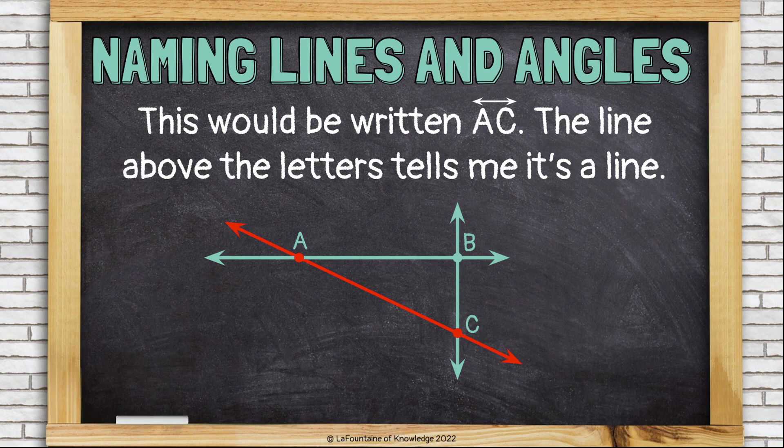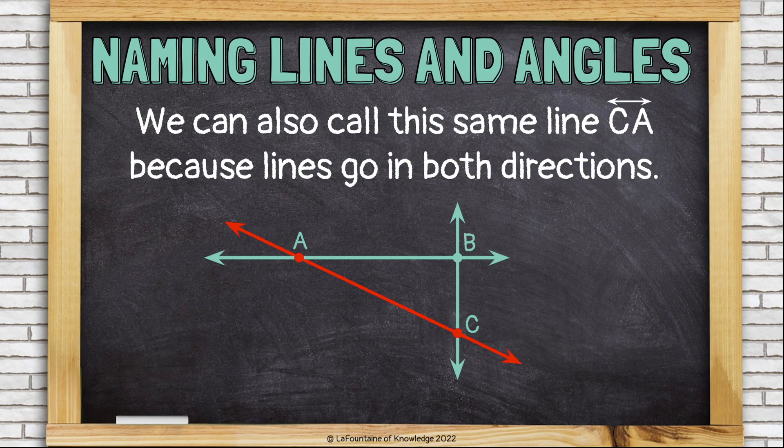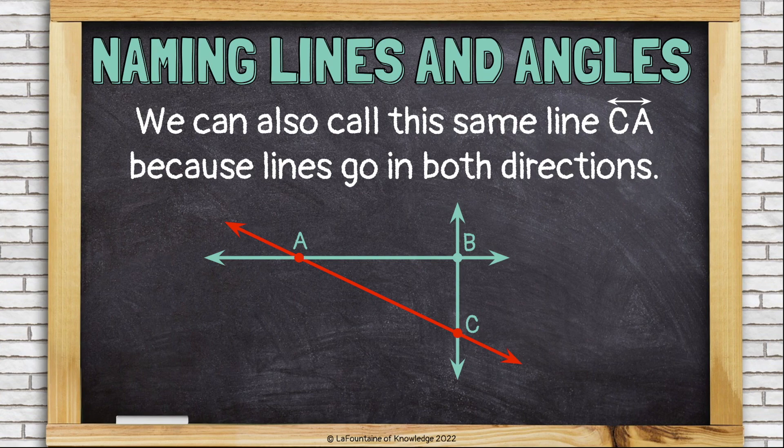The line above the letters tells me it's a line. We can also call this same line, line CA, because lines go in both directions.